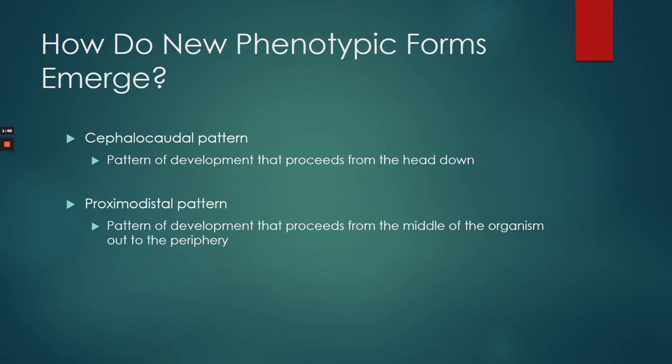And then we have proximal-distal. All that's saying is that embryonic development goes from the middle of the embryo to the outside. It's very similar — the central nervous system, the brain and the spinal cord, are again very important, and they're in the middle.